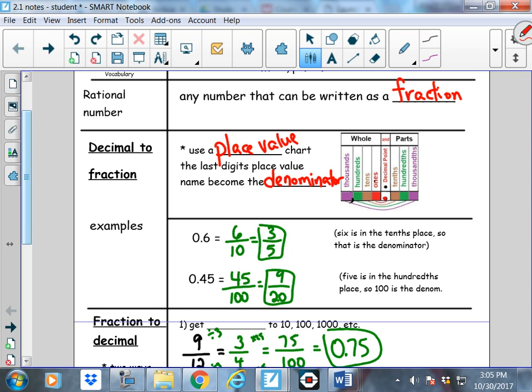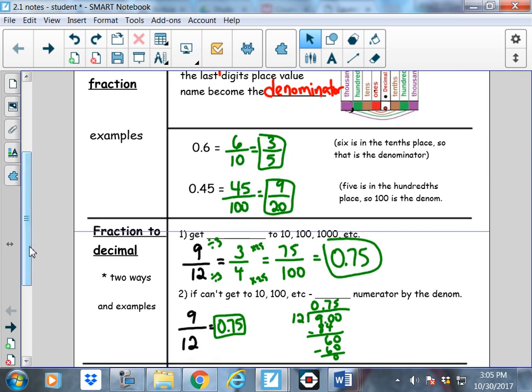But the decimal point is right here. Everything to the right of the decimal ends in THS. That's a part of a whole. Everything over here on this side ends in an S. Those are wholes. Ones, tens, hundreds, thousands on the left. Tenths, hundredths, thousandths on the right. So, hopefully that's review for you. Let me get rid of those. Take a look at these examples here.